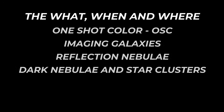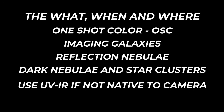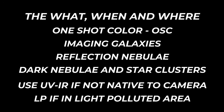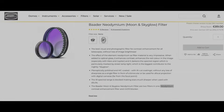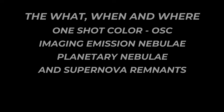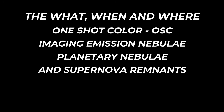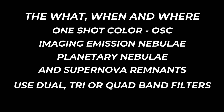Now that we know what filters are and what each one does, when do we use each one? Let's break it down by camera type and target. For one-shot color cameras imaging galaxies, reflection nebulae, dark nebulae, and star clusters: if your camera doesn't have a built-in UV/IR cut filter, add one. If you're in a light-polluted area, use a light pollution filter to improve contrast and reduce sky glow — many LP filters already include UV/IR blocking, so check the specs. For emission nebulae, planetary nebulae, and supernova remnants, this is where dual-band, tri-band, or quad-band filters come in. These isolate specific emission lines like Ha, O3, and S2, and work well with the Bayer matrix to reveal deep structure and allow you to create Hubble palette images.